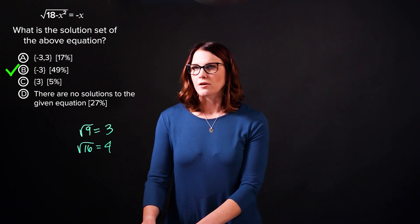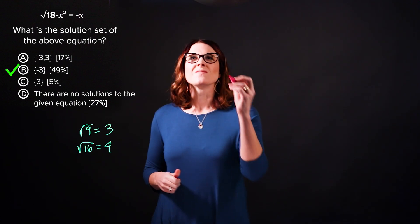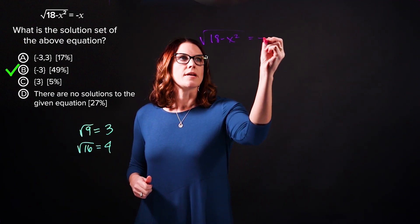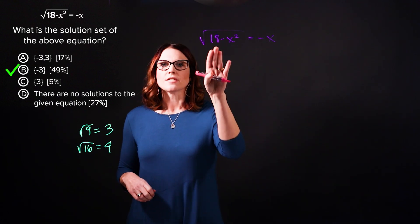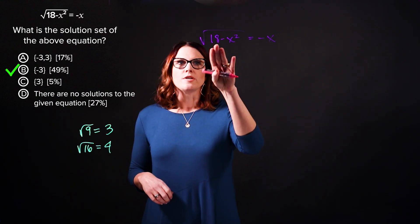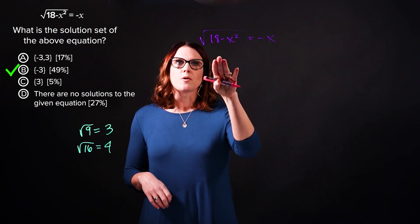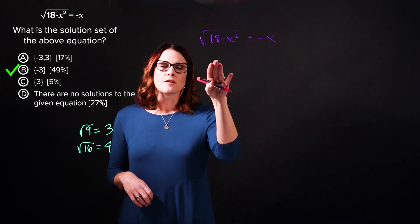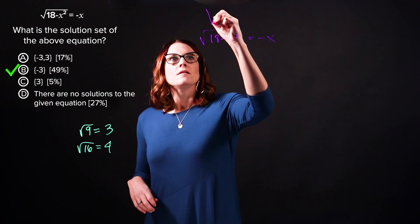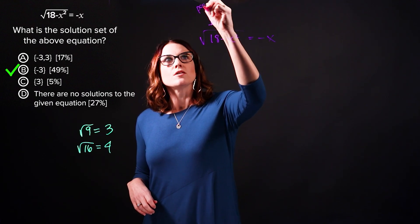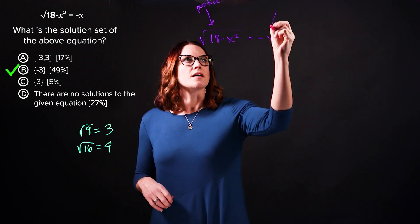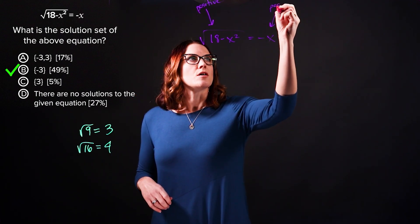So let's have a look at our given radical equation. The square root of 18 minus x squared equals negative x. As you can see, the left side of the equation is the square root of this expression. We don't yet know the value of this expression, but we know that the square root of this must be positive for there to be a solution to this equation. So the left side of the equation must be positive. And if that is true, then the right side of the equation must also be positive.